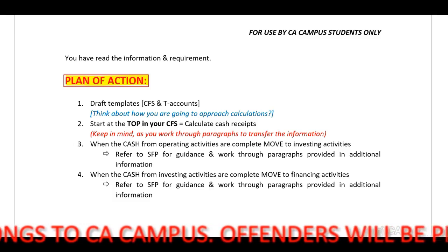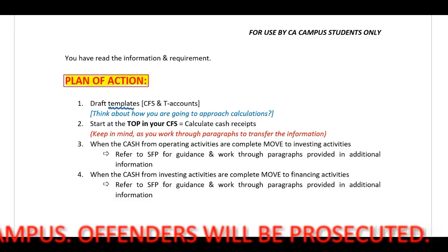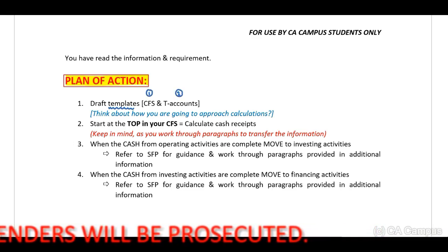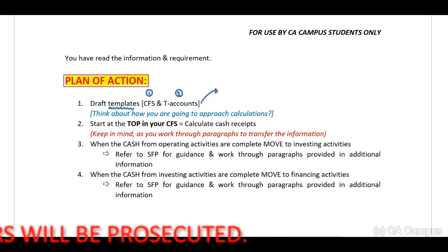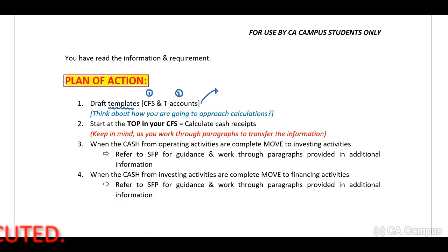There are a lot of easy marks that you need to ensure that you get. My first step: I will include my templates — my cash flow statement as well as my T accounts. When I draft T accounts, remember this is calculations, therefore you do not have to write the details relating to acquisition, transfer to IFRS 5, and so forth. Immediately include my opening balances as well as my closing balances from my statement of financial position, and remember to tick off the amounts that you have used to ensure that your cash flow statement is complete.